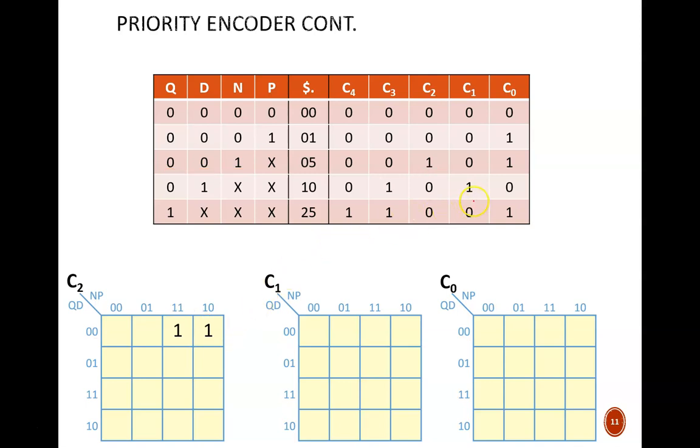C1 is high only when Q equals 0, and D equals 1. This takes us straight to the second row of the K map, where we fill in all 1s.